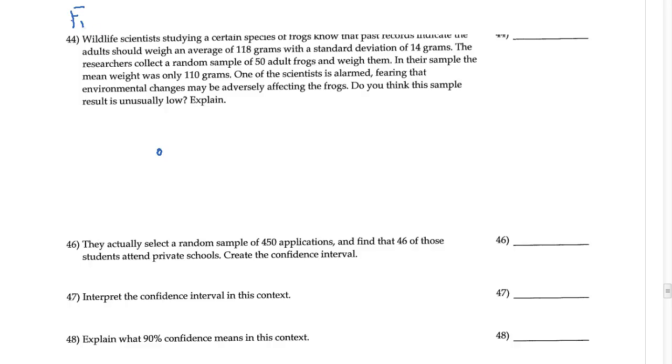Okay, so this is another free response question that we're looking at, and the question here is about a z-score and it being unusual. Alright, so let's go ahead and get started. Wildlife scientists studying a certain species of frogs know that past records indicate the adults should weigh an average of 118 grams.